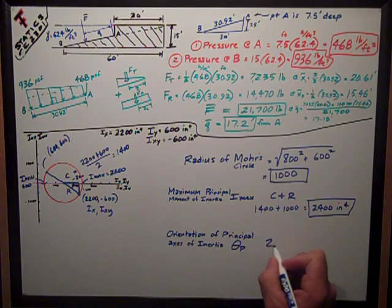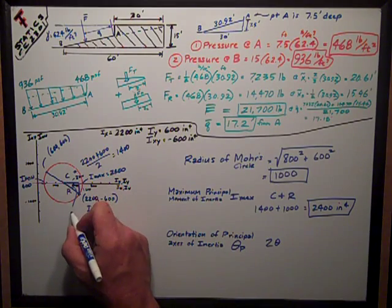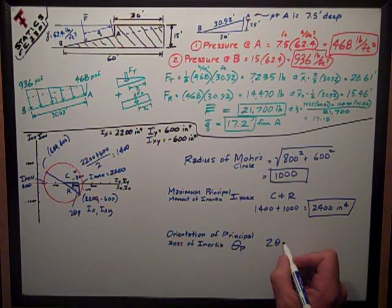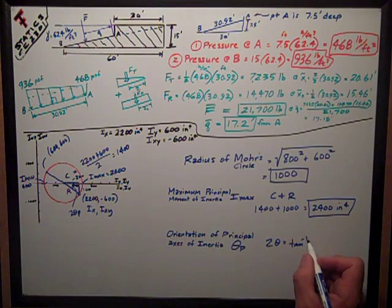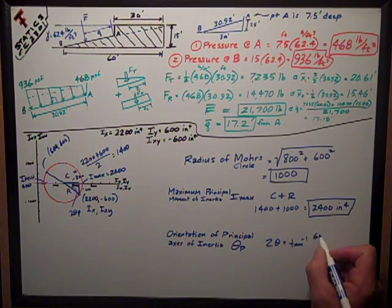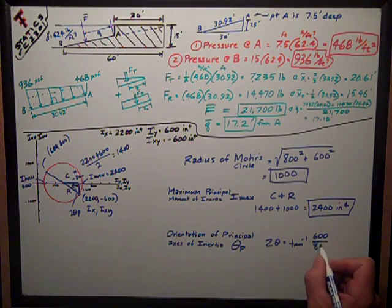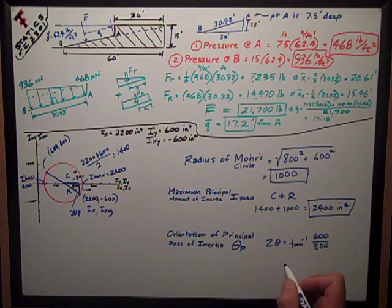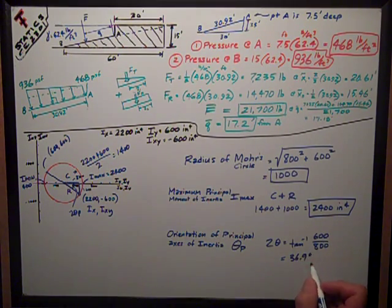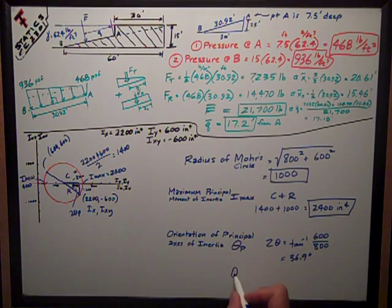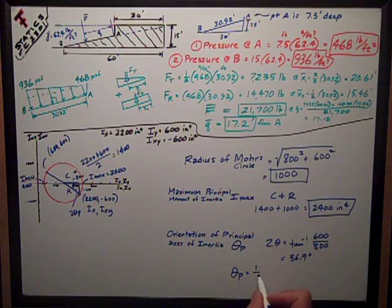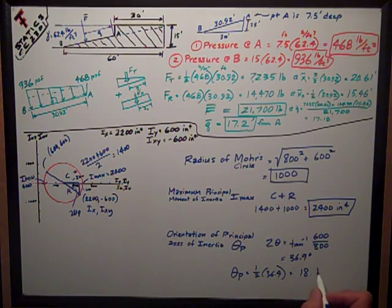So 2 theta p, which is what that angle is, equals the inverse tangent of the opposite, 600, over the adjacent, 800. That works out to be 36.9 degrees. Therefore, theta p is half of that. One half of 36.9 is 18.4 degrees. And that's the answer to the third part of that page.